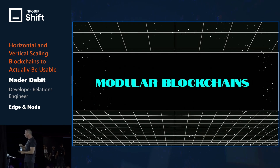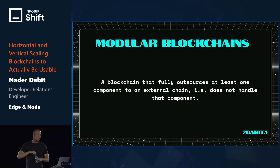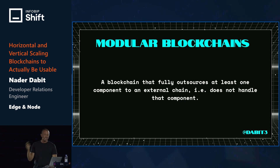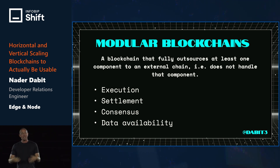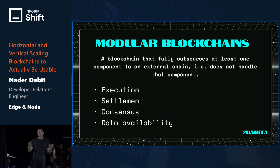Finally, let's focus on what I'm working on today: modular blockchains. A modular blockchain is a blockchain that outsources at least one component to an external chain, meaning it doesn't handle all components internally. The main components of a blockchain are execution, settlement, data availability, and consensus. Most blockchains do all of these things, but we've only recently started seeing the idea of separating these concerns — almost like a microservice architecture.